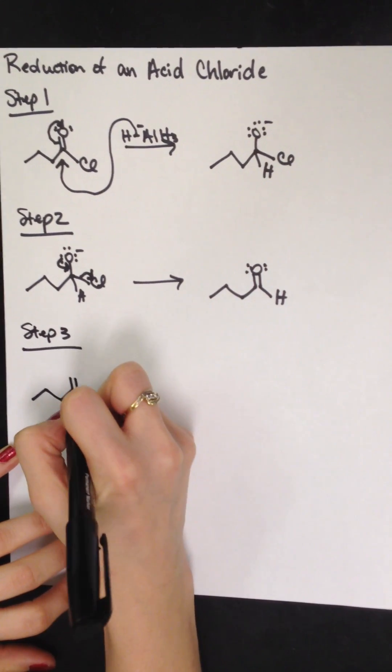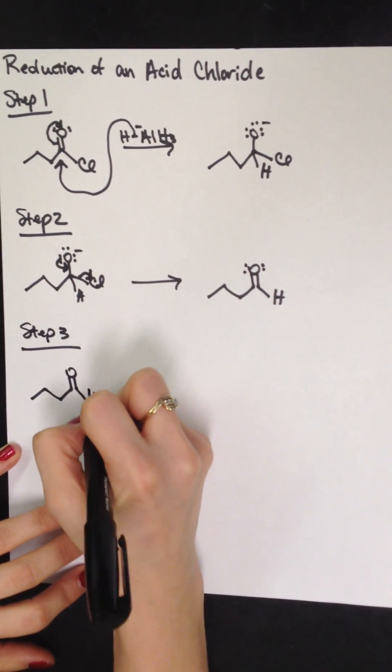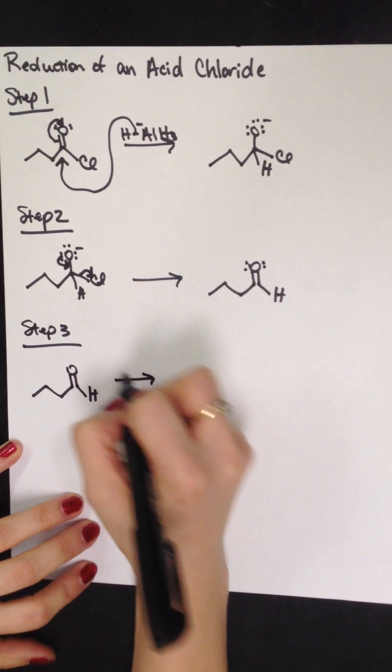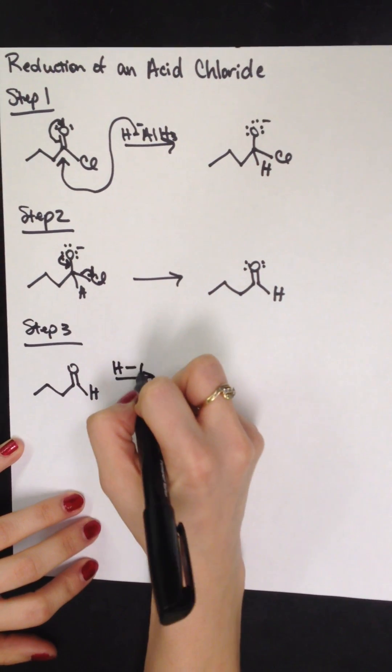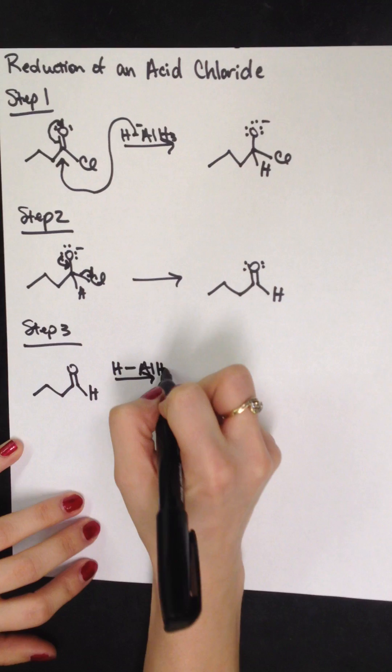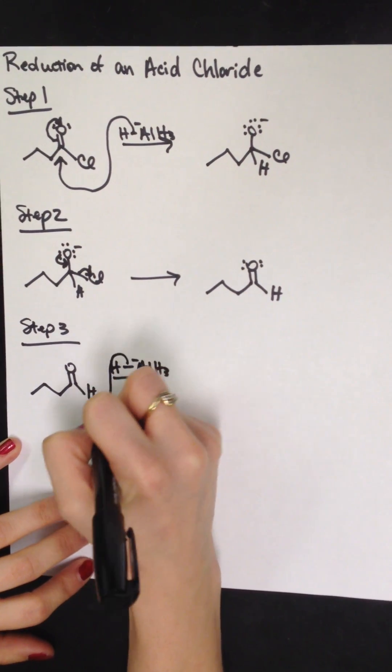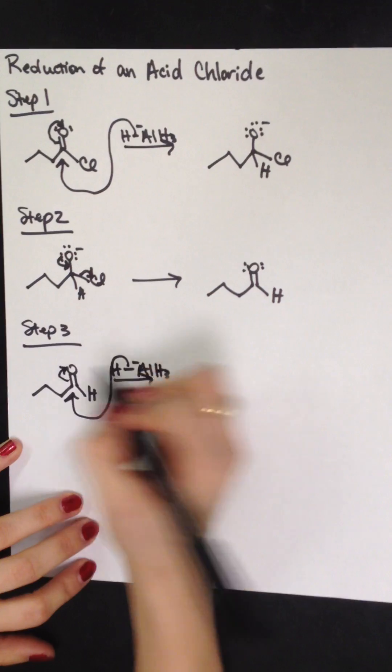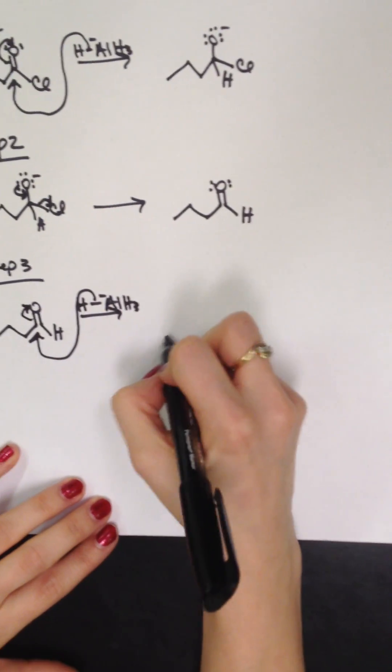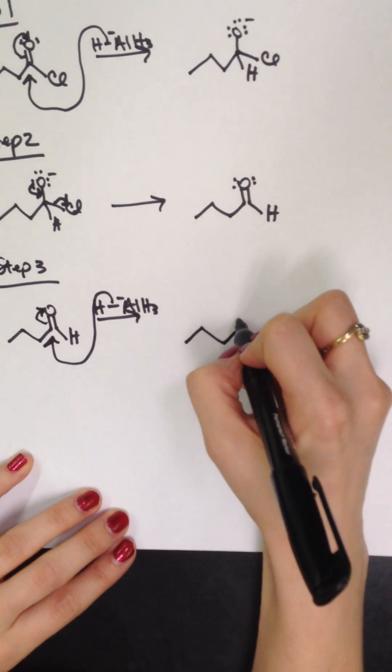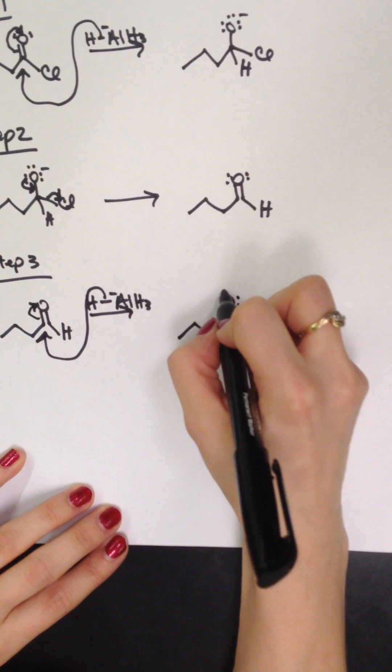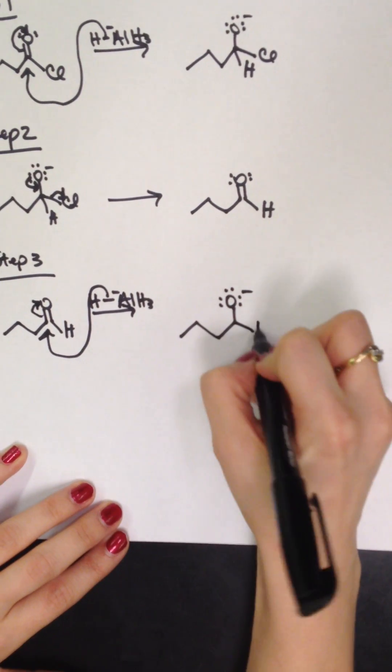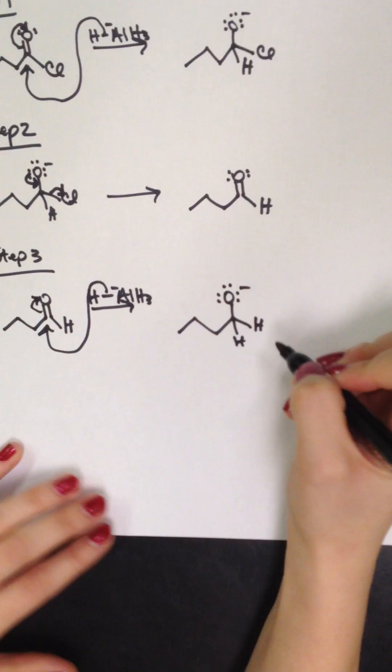This aldehyde that we just made is attacked once more by this aluminum hydride, with a strong negative to the delta positive, kicking off the pi bond yet again. This then forms another negative on the oxygen and a couple more hydrogens.